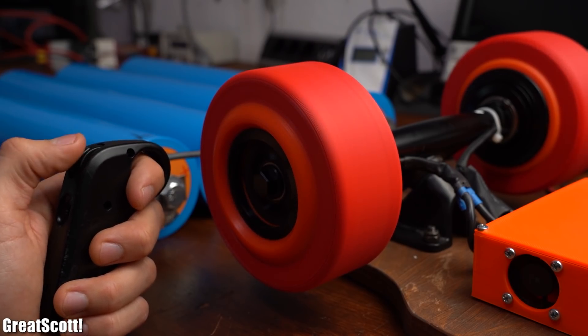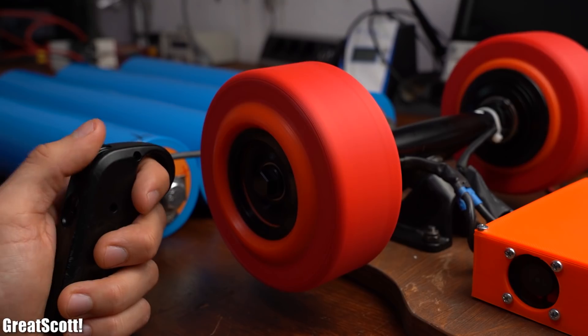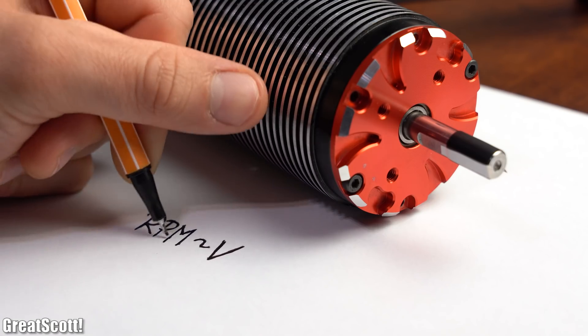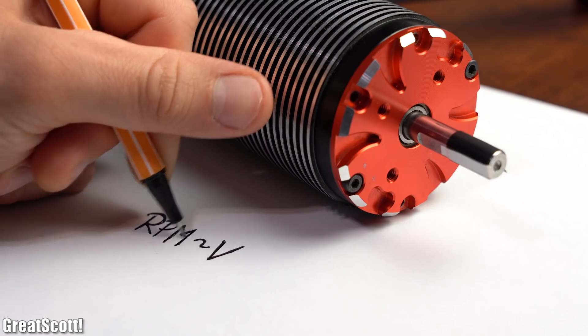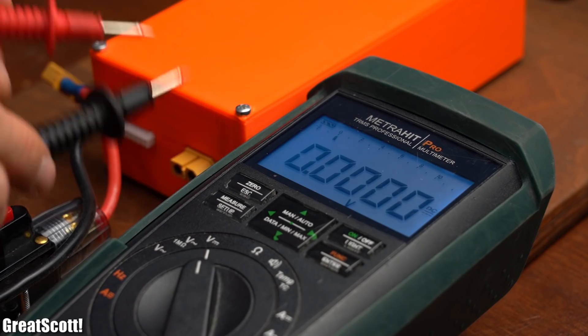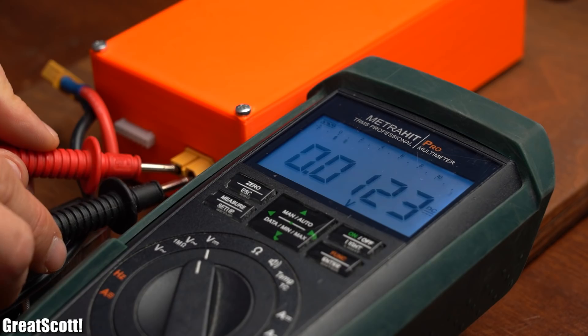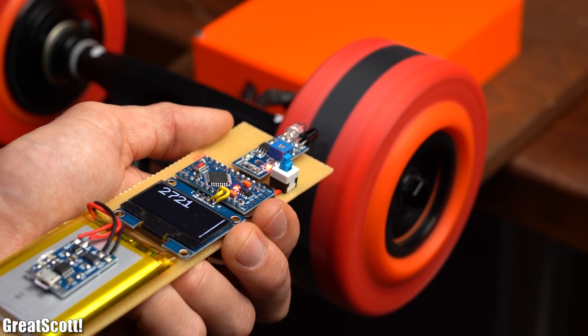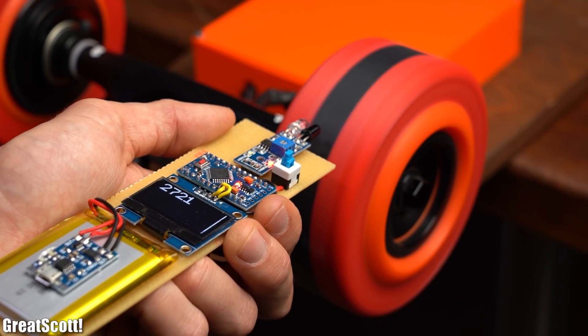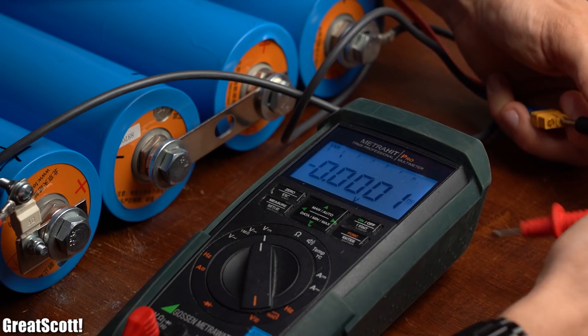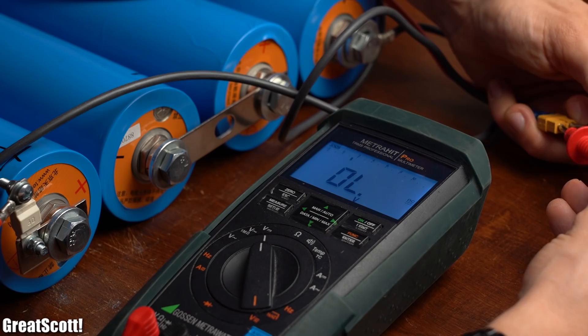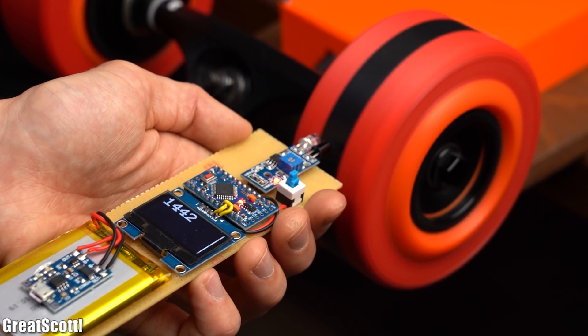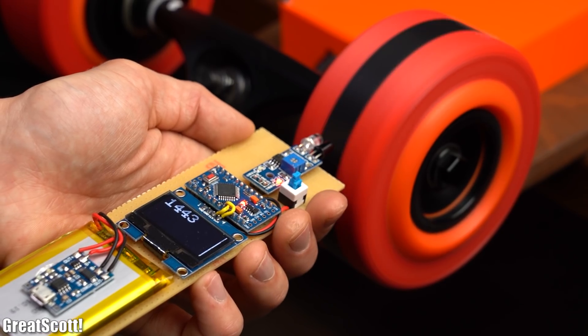As you might know the maximum RPM of any BLDC motor is dependent on the applied voltage. For example, with my old battery pack that features a voltage of 25V, we can reach an RPM of 2720. But the new battery pack comes with a voltage of only 13V which means the max RPM is only 1440.